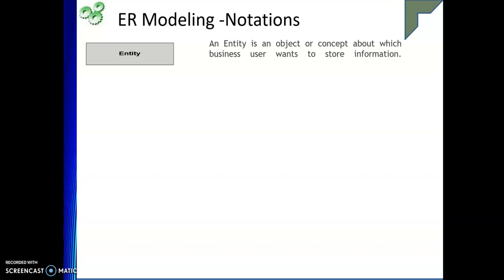So let us understand each of these notations. Entity — as we have discussed already, it is an object or concept about which the business user wants to store information, like student or employee. Entity is represented with a rectangle. Inside the rectangle we write the name of the particular entity — if it is student we write student, if it is employee we write employee. There are two types of entities: strong entity and weak entity. The rectangle represents the strong entity.